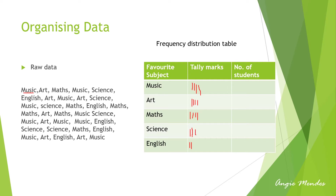On the fifth tally mark, we do not add another straight line. Instead, when it is the fifth mark, we strike off the four with an oblique line, making one group of five tally marks. We don't make a group of five straight tally marks; the oblique line across the four becomes one group. Every time you have done four tally marks, the fifth is an oblique line giving a group of five, and then you proceed forward.